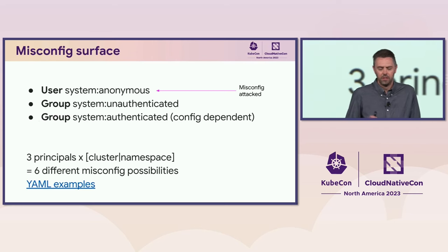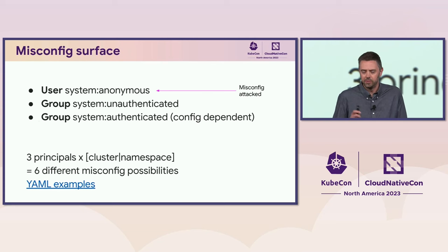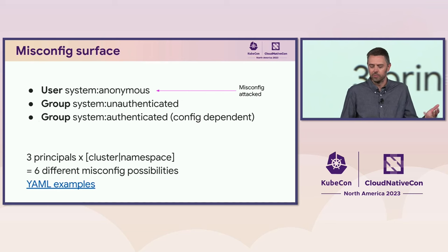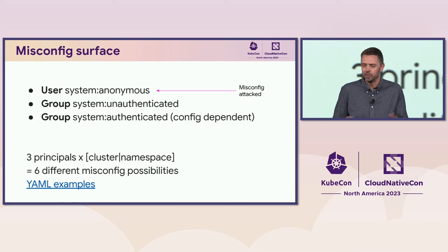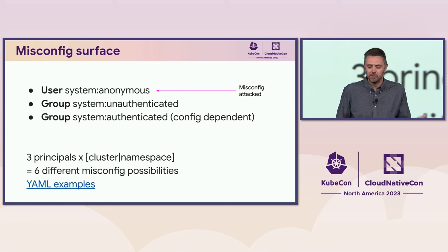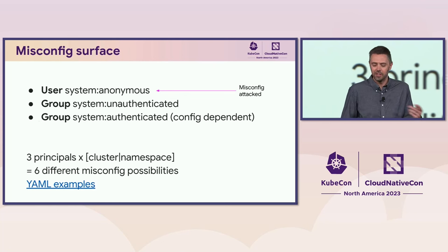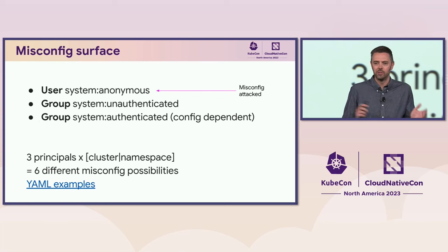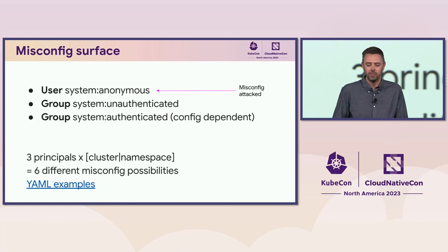Let's talk about prevention. The misconfiguration surface here includes system:anonymous — a user — and system:unauthenticated — a group — both representing anyone on the internet. There's also system:authenticated which varies by configuration. For each of those three principals at two binding levels (cluster and namespace), that's six different combinations of possible misconfigurations to worry about. We wrote them all out, with a link to GitHub where all the demo code is, so you can see exactly that YAML.